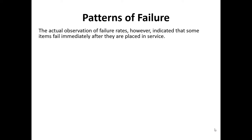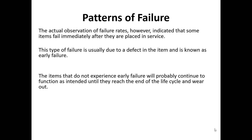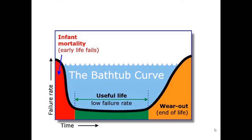However, when you do experiments, you find something else — failure can happen at different times in the lifecycle of a product. When you do experiments on the potential of failure, you'll notice that a certain type of graph can be constructed from the data of these observations. This type of graph is called the Bathtub Curve. If you were testing a product and monitoring the failure rate over time and you plot the data, you will see that it forms a graph in the shape of a bathtub — hence the name Bathtub Curve.